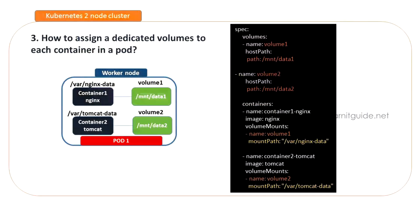In the third scenario, how to assign a dedicated volume for each container in a pod. There is one volume for the nginx container and a separate volume for the database or Tomcat container. This is a dedicated volume per container. We have multiple containers and we will assign a dedicated volume to each one. In the spec section, define all volumes — using hostPath, we define Data1 and Data2 as two separate volumes, then assign each volume to its respective container.